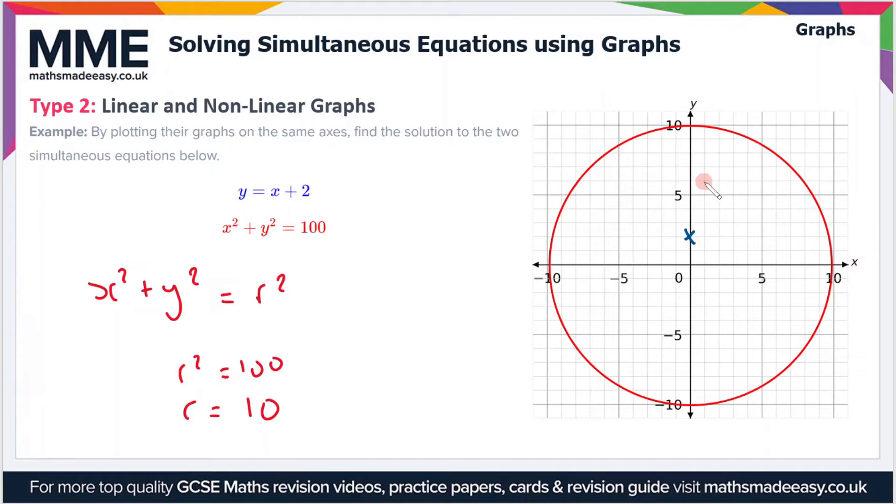So that means that for every 1 we go across, we go 1 up. If you plot the graph, it should end up looking something like this. And then as you can see there's two points where the graphs cross over each other.